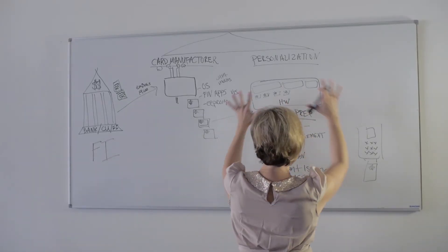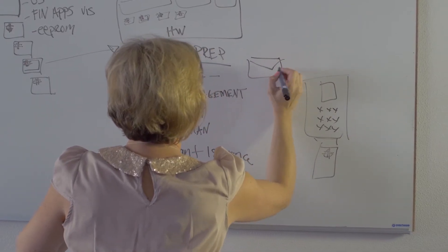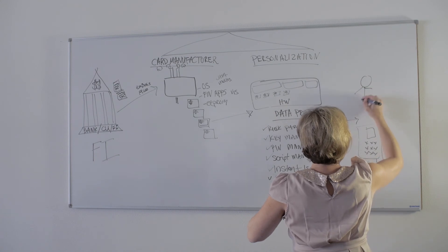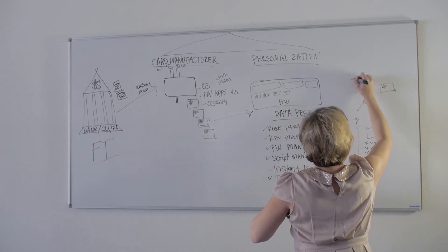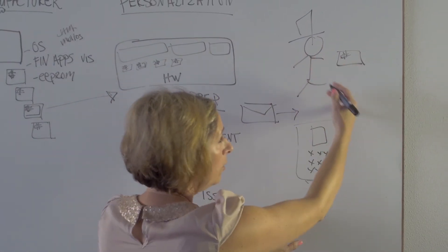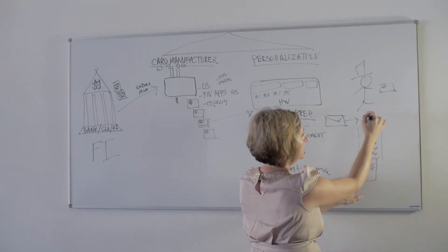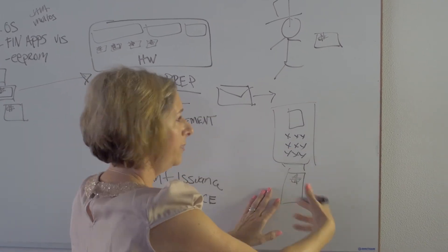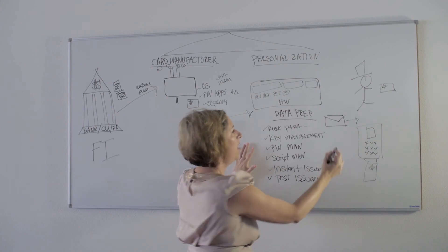Once that card has gone through personalization and it's in the envelope, it's out the door and in the hands of the cardholder. That card is used in the field. Well, if this gentleman or woman blocks their card with a PIN, you have to send a script basically to this card at the ATM or when the card's online to change the PIN, to block the PIN. Basically you're sending scripts.